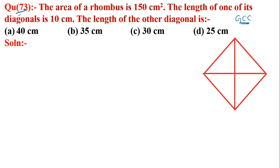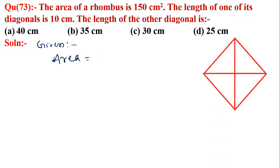Chapter area, question number 73. The area of a rhombus is 150 square centimeters and the length of one of its diagonals is 10 centimeters. Find the length of the other diagonal. Given: area of rhombus = 150, and the formula for the area of a rhombus is equal to half into diagonal 1 into diagonal 2.